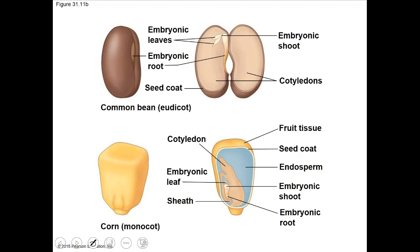We've got the seed coat and two large cotyledons in the dicot — so we don't really have a whole lot of room for endosperm. However, in a monocot, you will still see the endosperm developing within the kernel, and then we have one cotyledon, one seed leaf forming. This is a bit different.